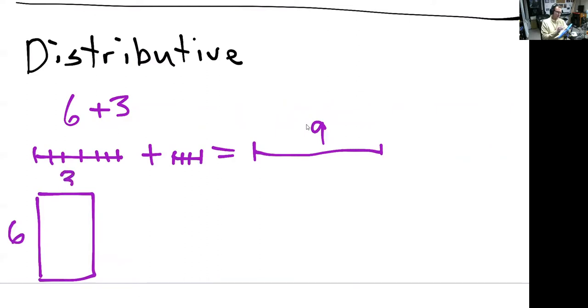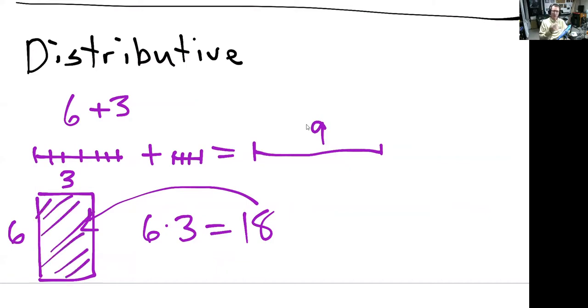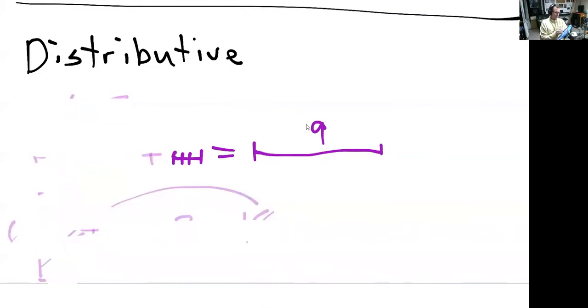Multiplication can be related here to area. 6 times 3, which is of course 18, it relates to the area, square feet if you will, square yards, of that rectangle that's formed by a 6 foot by a 3 foot, or 6 unit by 3 unit rectangle. That's the area of it. So this would be 18 square units.